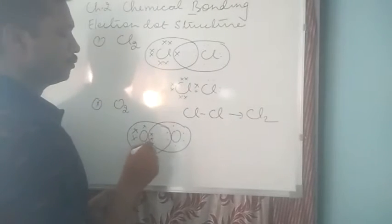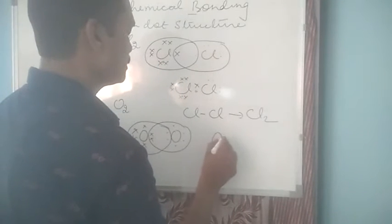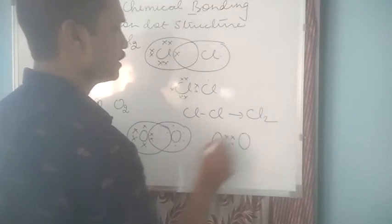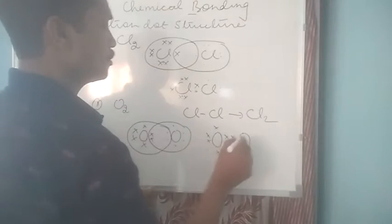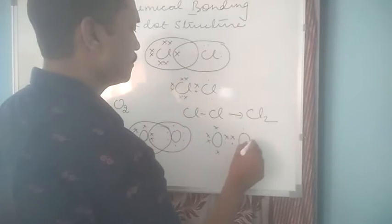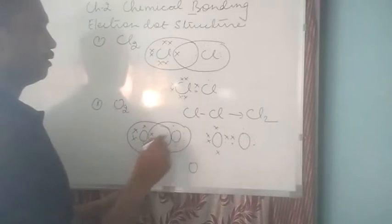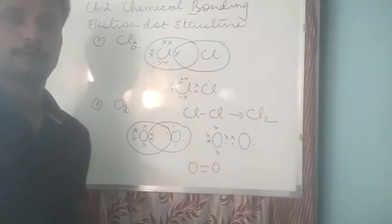Where you can see there are 2 shared pair of electrons. So we can again keep this shared pair of electrons close to oxygen atoms and the other electrons can be shown as it is. That means this shared pair of electrons is going to form double bond between oxygen molecules.